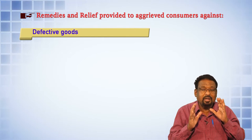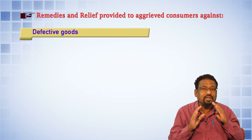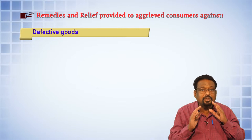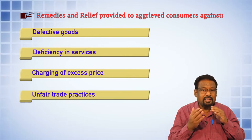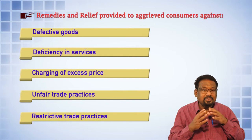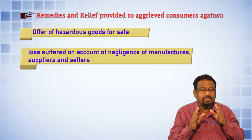The remedies provided to aggrieved consumers are: first, a remedy against defective goods sold or defective goods purchased by the consumer. This is the remedy available to the consumer who purchased goods presumed to be of good quality but which later turned out to be defective. There are remedies available in the Consumer Protection Act for such cases.